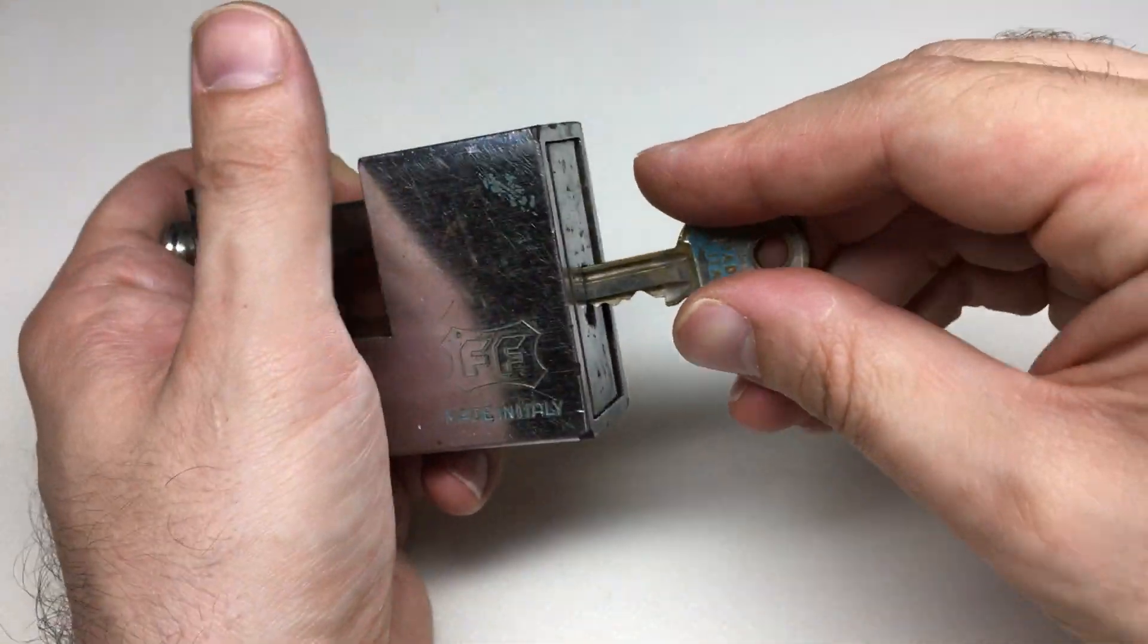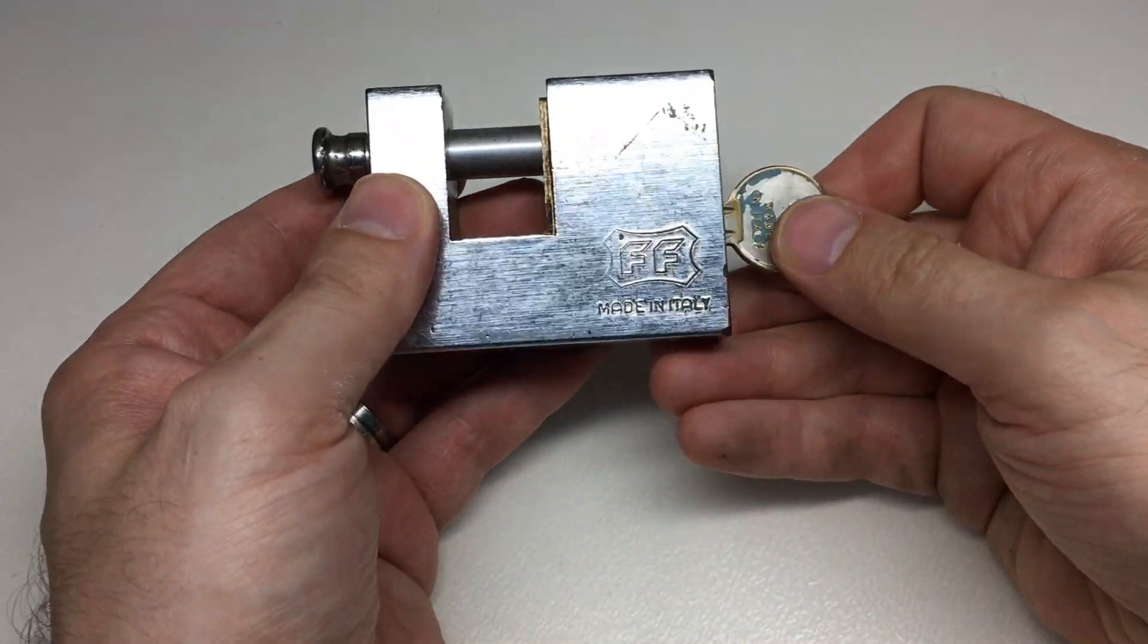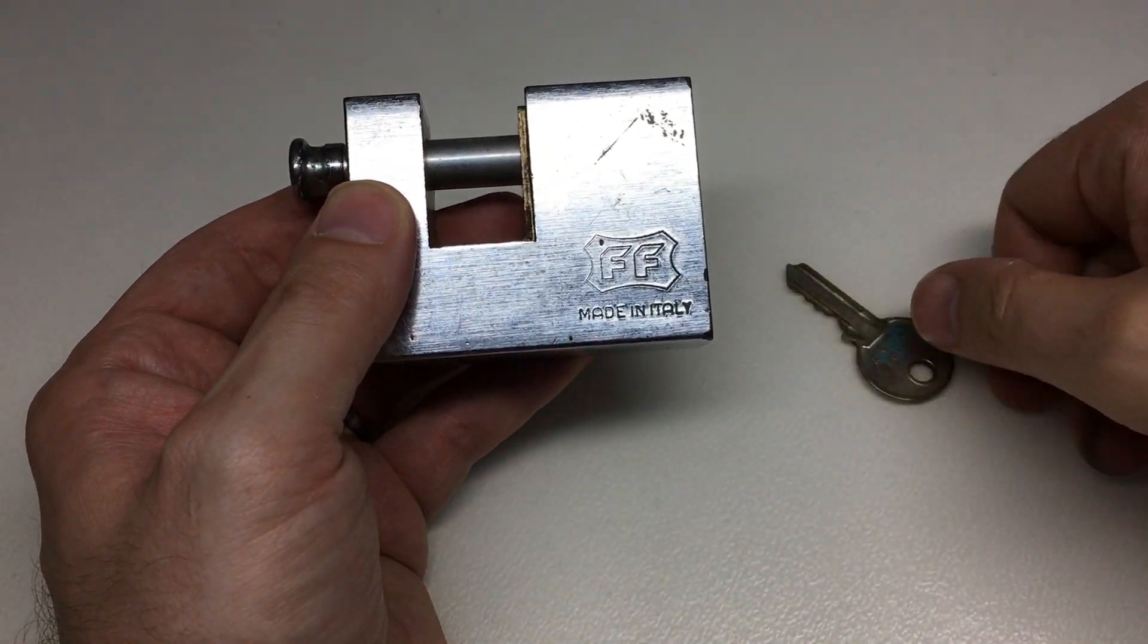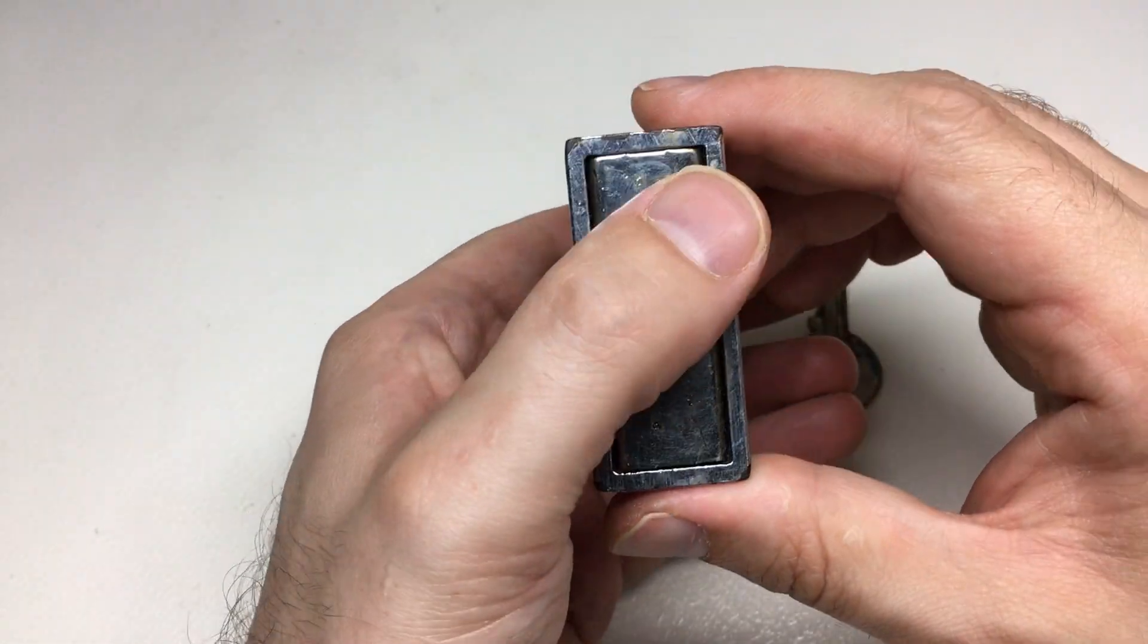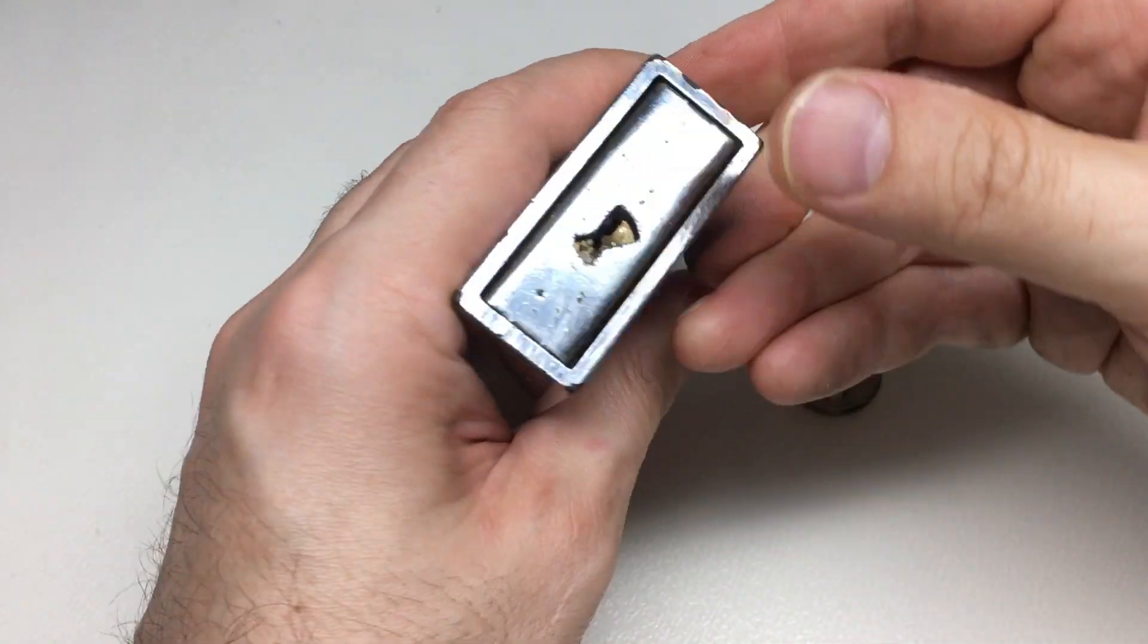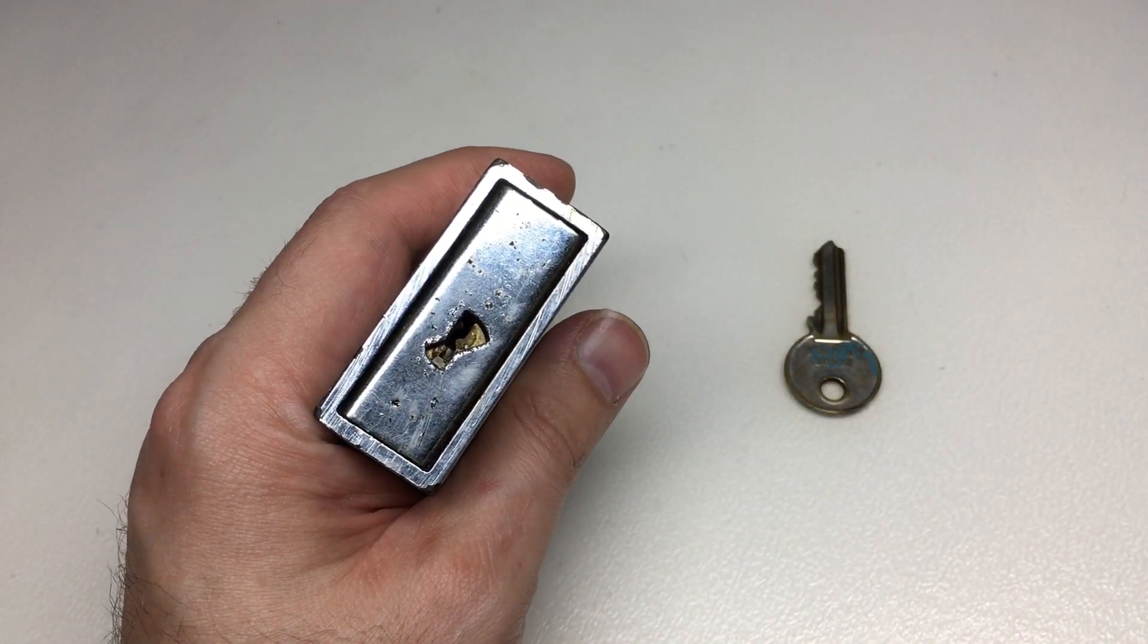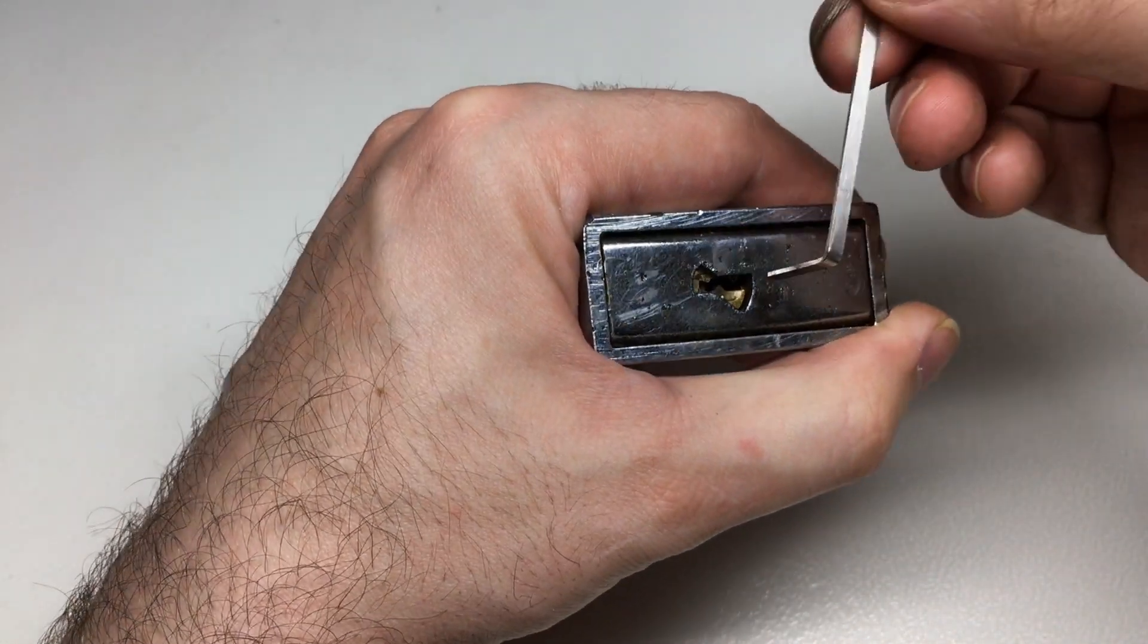In the UK, you can get them, but they tend to only sell these Fascianetti padlocks to property services for locking up construction sites and shop fronts. I'm actually very lucky to have this one, though I can't remember who gave it to me, which is very bad form, isn't it?